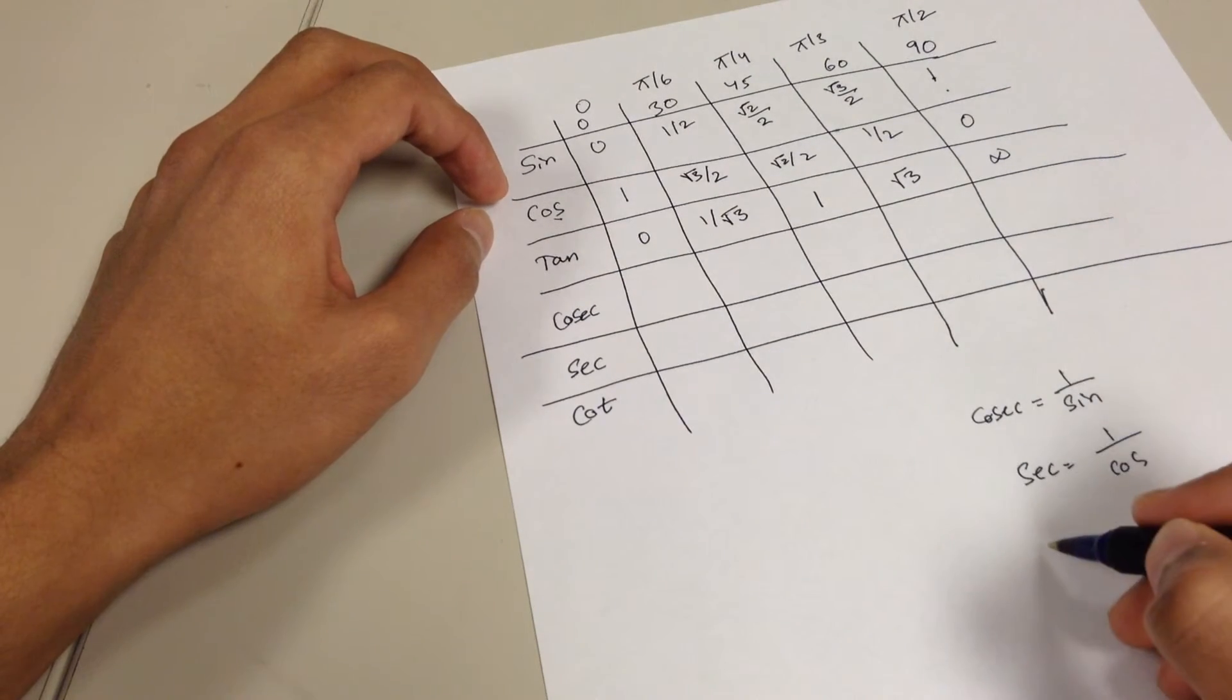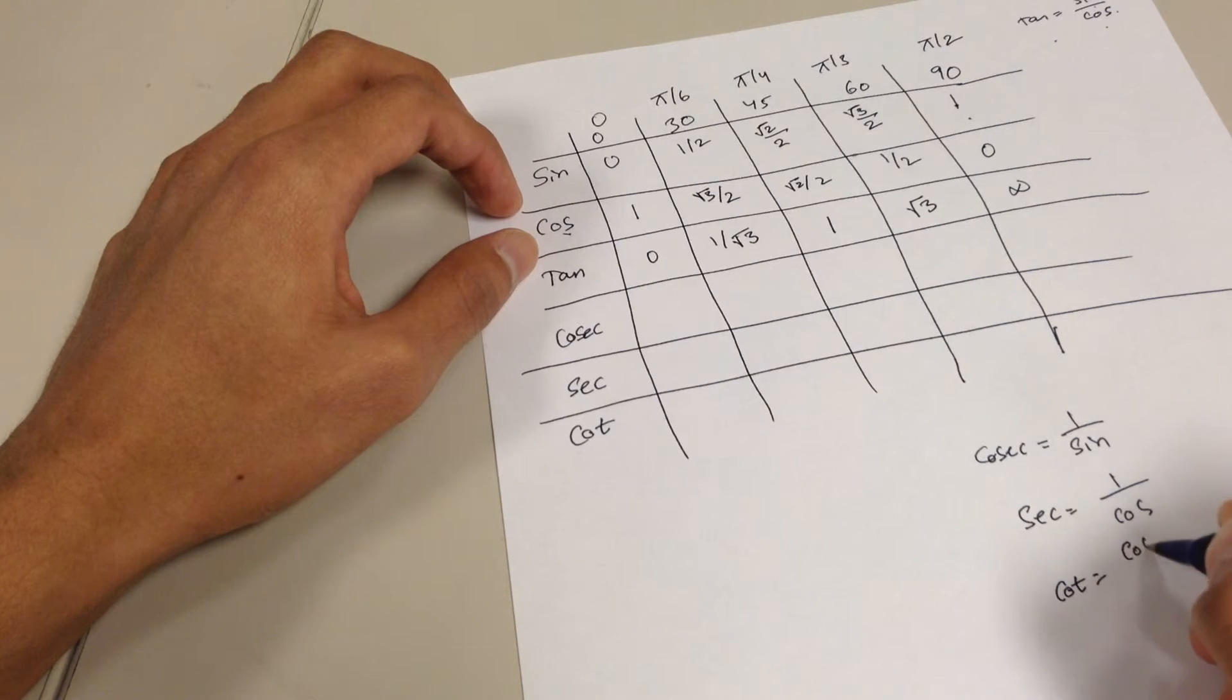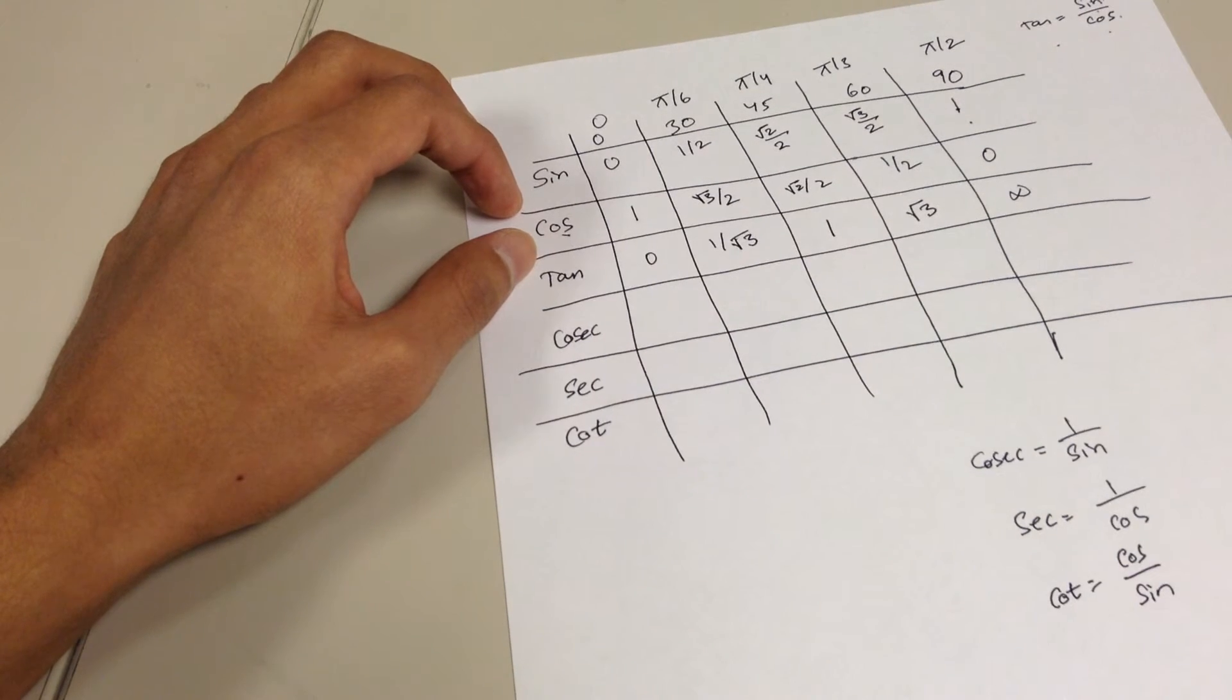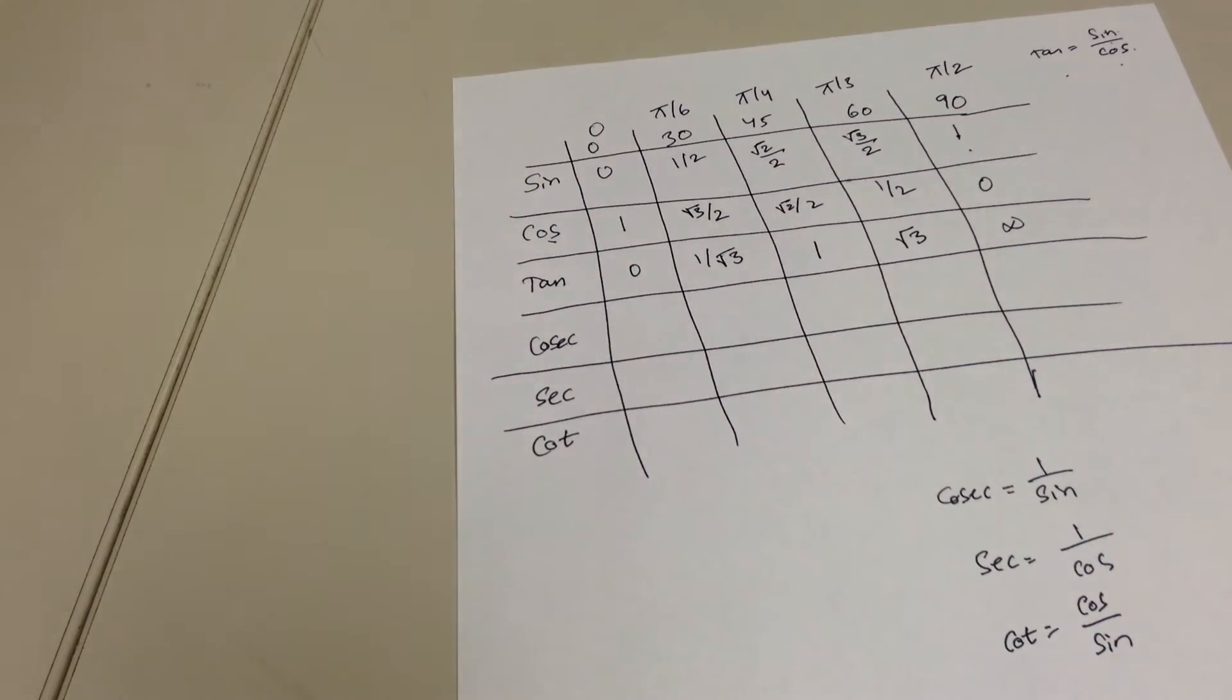again, just how tangent was sine over cosine. Cotangent is going to be cosine over sine. So why don't you fill this table out, and then I will show you however what you should end up getting.